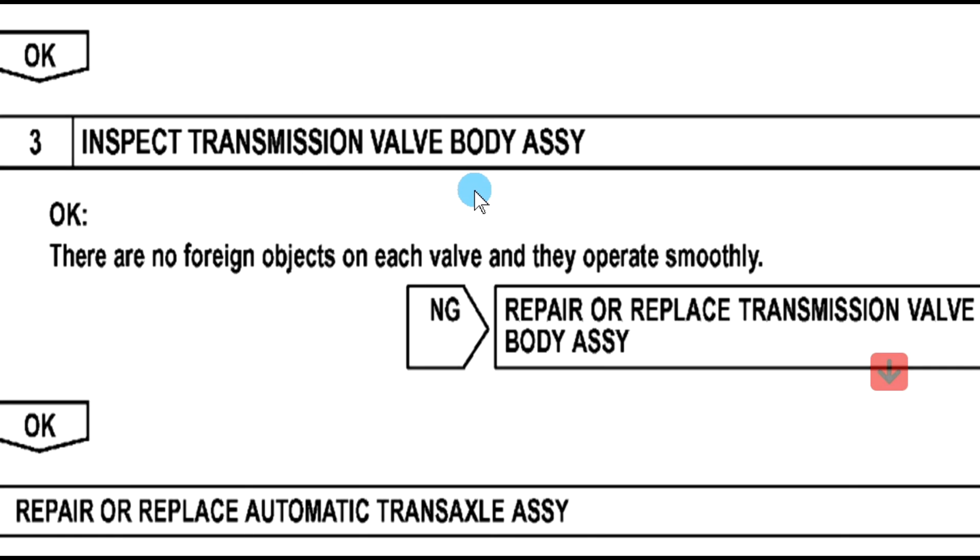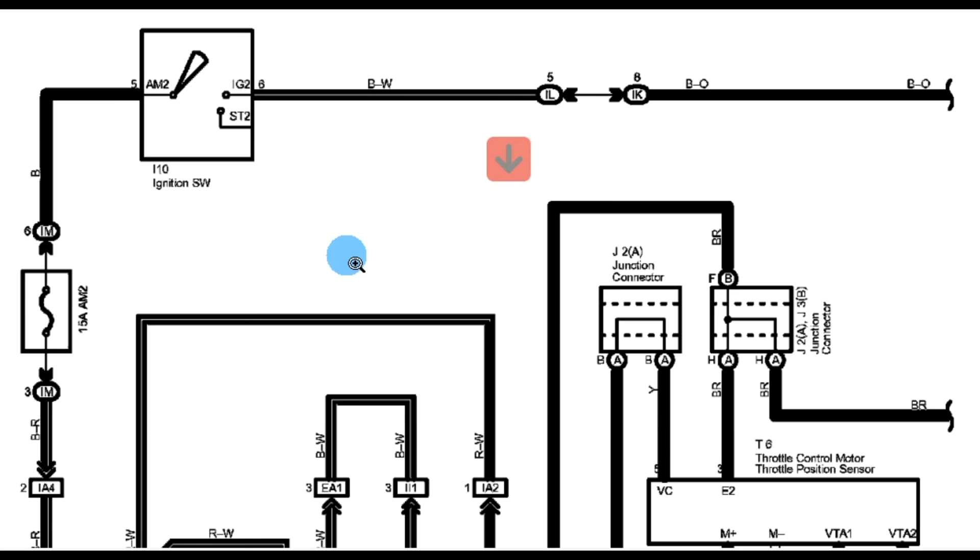Finally, you check the transmission. You gotta check the valve body. Sometimes the valve body is the problem. So if the shift solenoid is good and the wires are good, everything is good with the PCM, then the problem should be over here on the transmission. Alright, before getting into the valve body here, let me show you the wire diagrams for all the solenoids here.